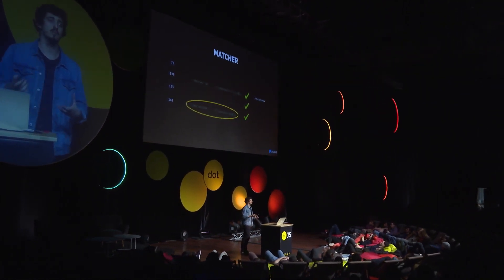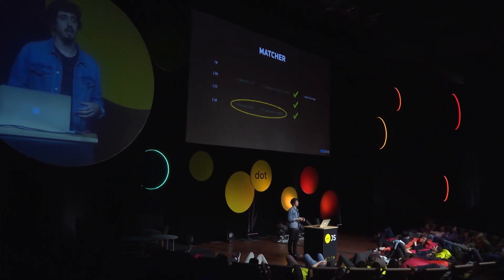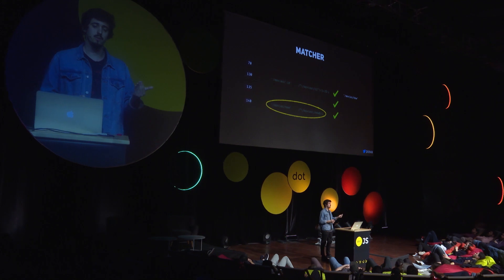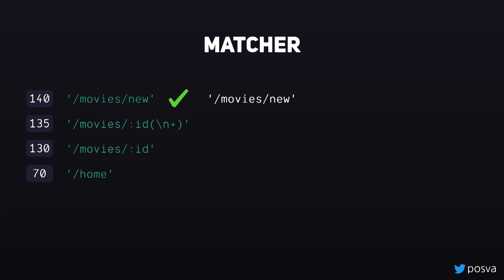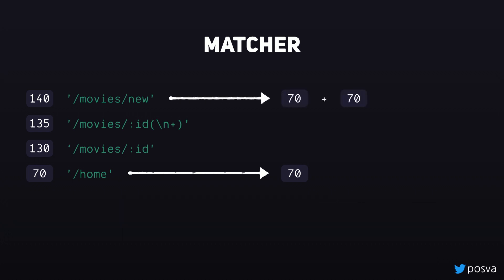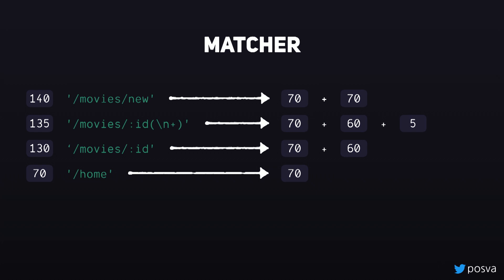To handle this, we implement something called path ranking. We give a score to every record or route saying how much it's worth — the higher the score, the higher it appears on the list and the quicker it's checked. The basics: we apply a score of 70 to a static path because it's a static string that doesn't change. A route with two static sections gets 70 plus 70. Something dynamic gets 60 instead of 70. And a custom regex gets a bonus of five points.